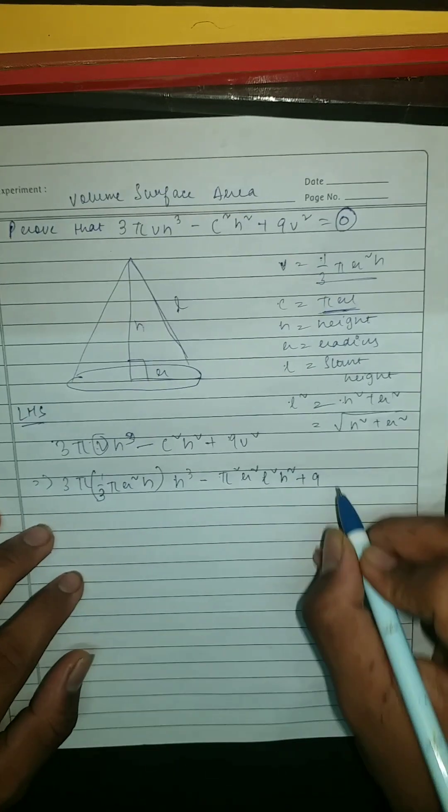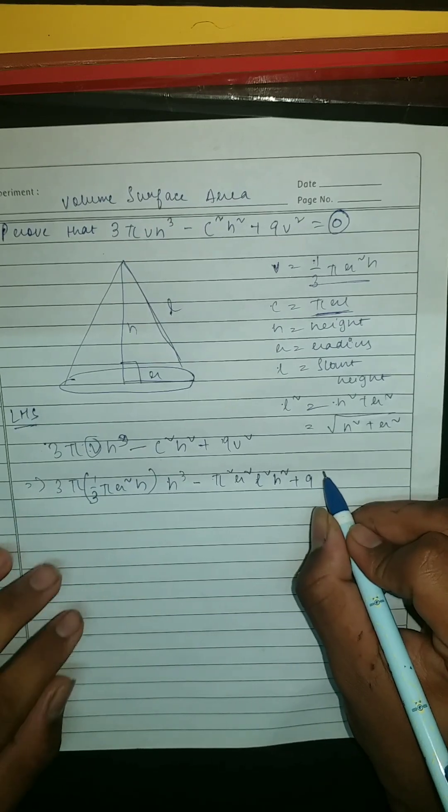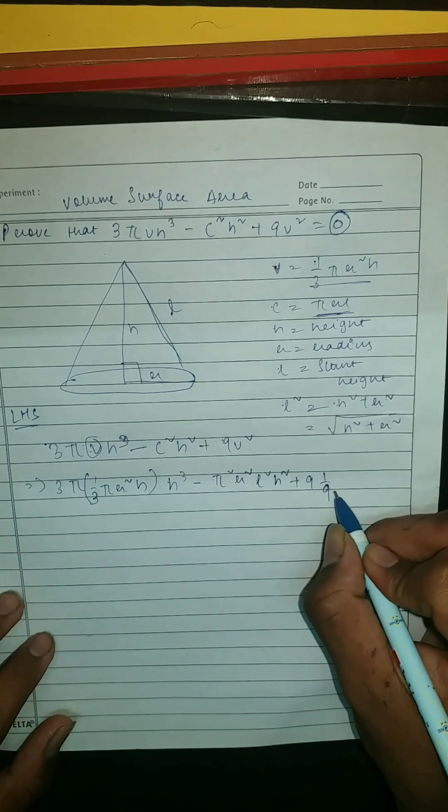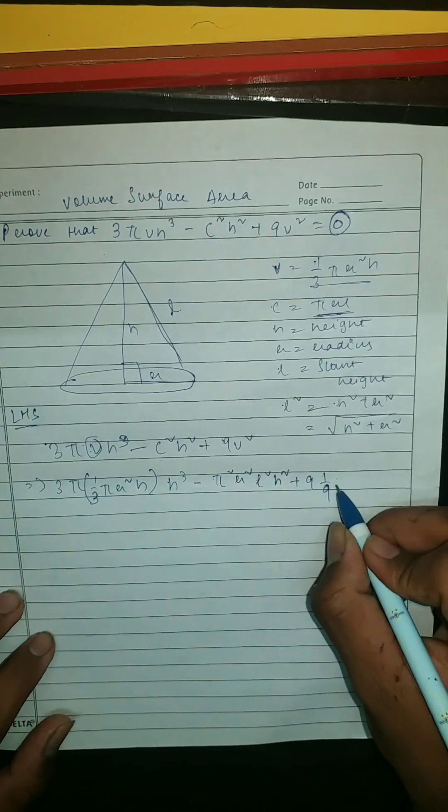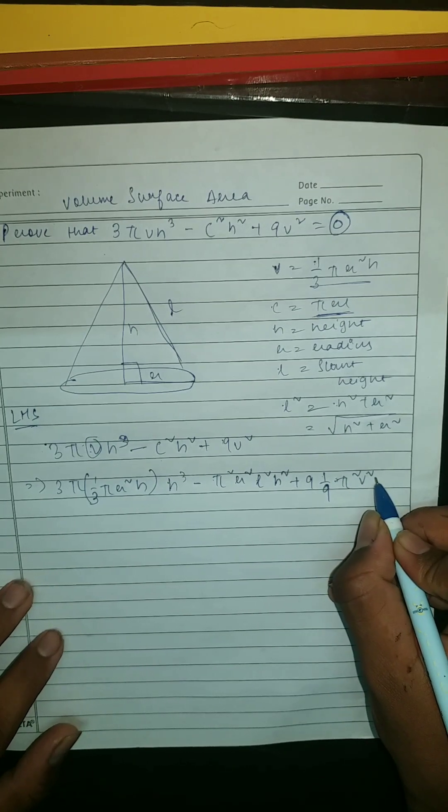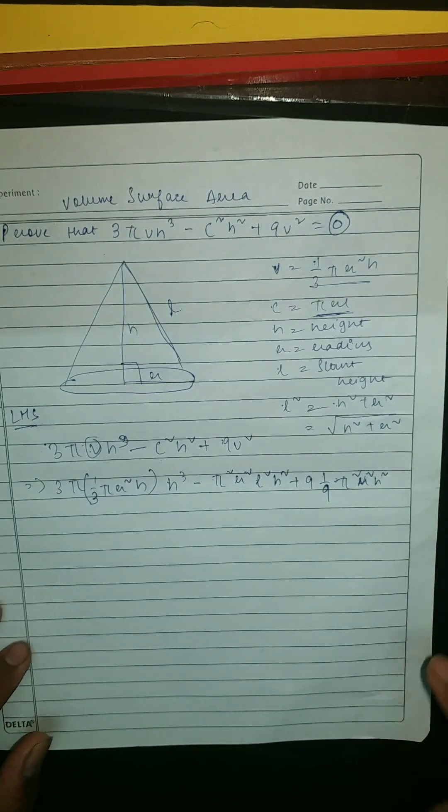Plus 9, then this should be V which is 1/3 - you know 1/9 because squared - and this should be π²r²h² as you can see.